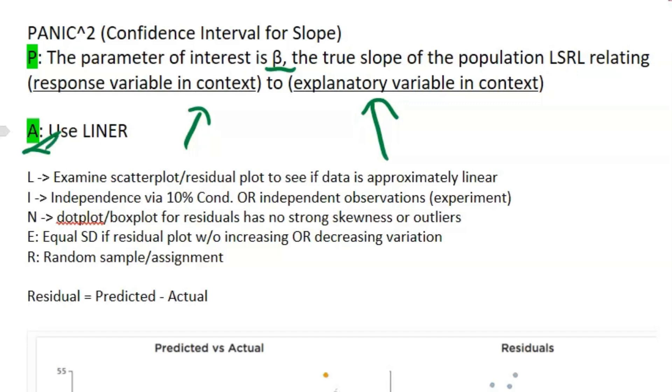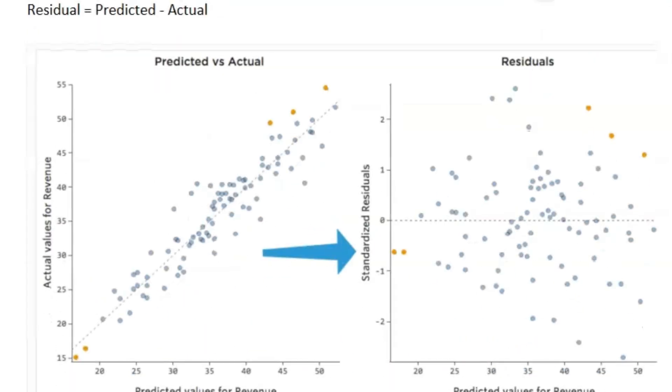For the assumptions and conditions, this is why you usually won't be asked to do a full procedure on the AP exam because there's five of them to check. You need to check the residual plot or scatterplot to see if the data is approximately linear. Check for independence, 10% condition, or if it's independent observations if it's an experiment. Then you've got your dot plot or box plot of residuals - you don't want any strong skewness or outliers. And along with that goes you want equal standard deviation or variance if the residual plot does not show increasing or decreasing variance.